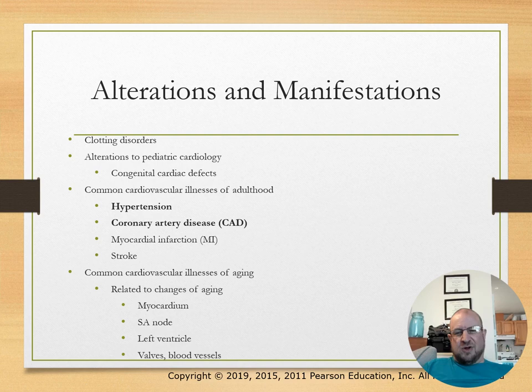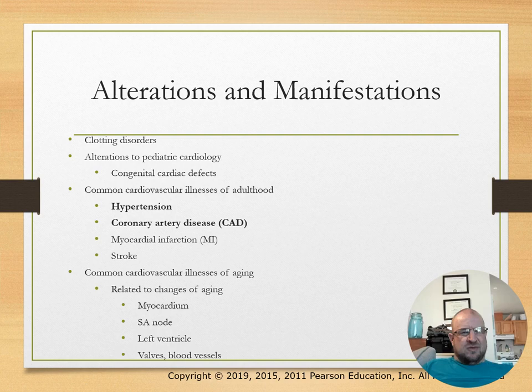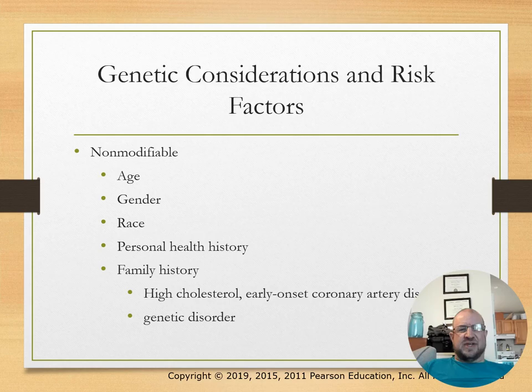The most common conditions in adults are hypertension, coronary artery disease, myocardial infarction, stroke, and also heart failure. Common cardiovascular illnesses of aging affect the myocardium, sinoatrial node, SA node, left ventricle, valves, and blood vessels. Some genetic considerations and risk factors include age, gender, race, personal health history, family history, and some genetic disorders.